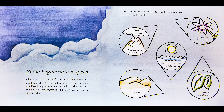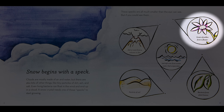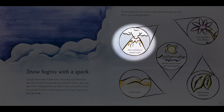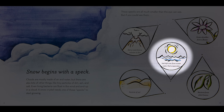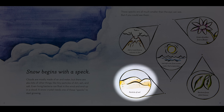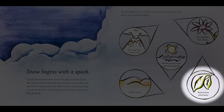If you could see them: a grain of pollen from a flower, ash or soot from a volcano or fire, salt left over from ocean water that evaporates, a particle of soil, or bacteria from plant leaves.